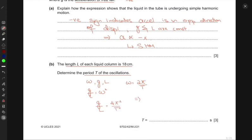This gives me T equals square root of 4π²L over G. We know G is 9.81 meters per second squared, L is 0.18 meters. Putting in those values, this would be 4π² times 0.18 divided by 9.81, which gives you 0.85 seconds.